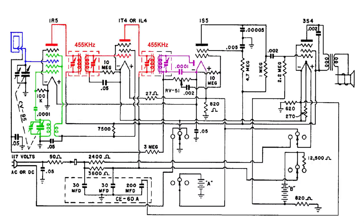And the detector circuit is the plate and filament of the 1S5. And what that does is it changes that 455 kilohertz information into audio. And the audio goes over to the volume control.